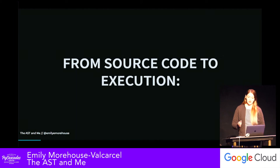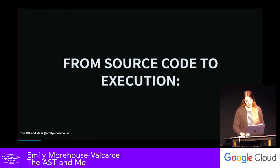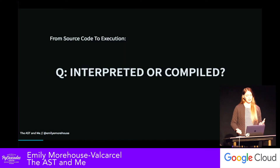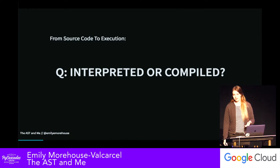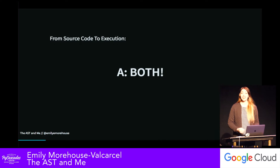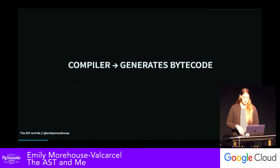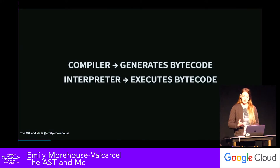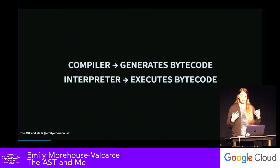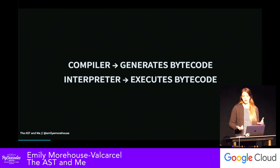We'll start our journey from source code to execution to build an understanding of the broad steps it takes to compile a piece of Python code. The first question is: is Python interpreted or compiled? Yes — and that is the exact right answer. It is both. Our compiler generates bytecode, and our interpreter makes sense of that bytecode in order to actually execute your code. One of the ways Python is dynamic is that the same bytecode does not necessarily always have the same outcome.